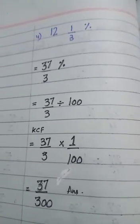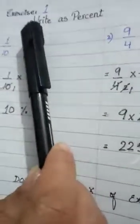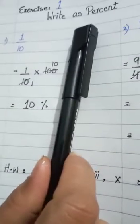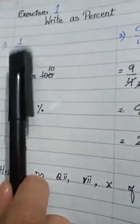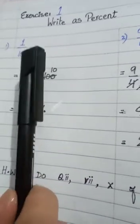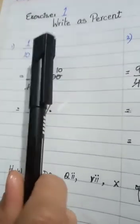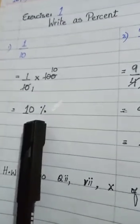Now we will do exercise number 1 of page number 9. The heading of page number 9 is 'Write as percent.' This exercise means fractions are given and we will convert them into percentage. The last exercise was the opposite — a percent was given and we converted it into a fraction or mixed number. Now a fraction is given and we will convert it into percentage, so we will multiply the fraction by 100.